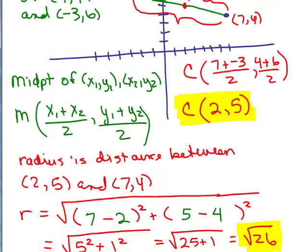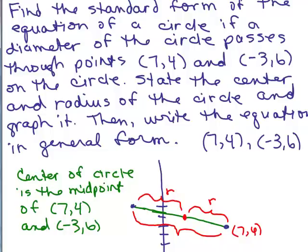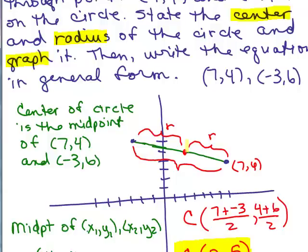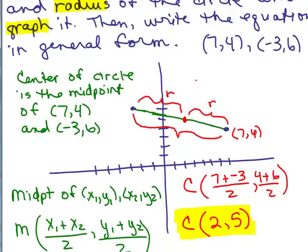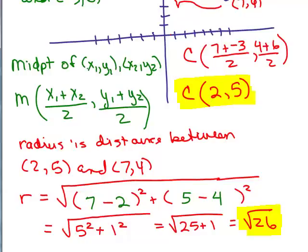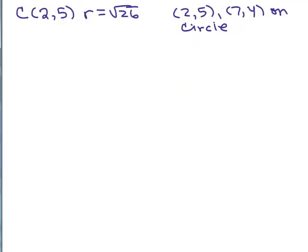Now let's go back to what the question was. State the center, okay cool. State the radius, we figured that out. Graph it, actually graphing it isn't so bad because we've got this picture here. Since that's the center, I could now figure out. We've got the center of (2,5) and the radius of √26. We know (2,5) and (7,4) are on the circle.